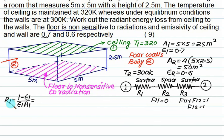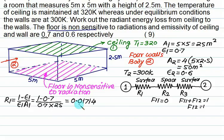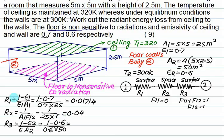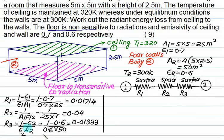Radiation heat transfer is described by three resistances: two surface resistances and one space resistance. Surface resistance R1 = (1 - epsilon_1) / (epsilon_1 × A1) = (1 - 0.7) / (0.7 × 25) = 0.01714. Space resistance R2 = 1 / (A1 × F12) = 1 / (25 × 1) = 0.04. Surface resistance R3 = (1 - epsilon_2) / (epsilon_2 × A2) = (1 - 0.6) / (0.6 × 50) = 0.0133.